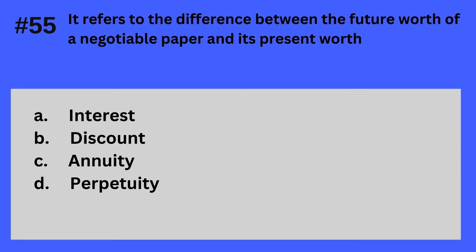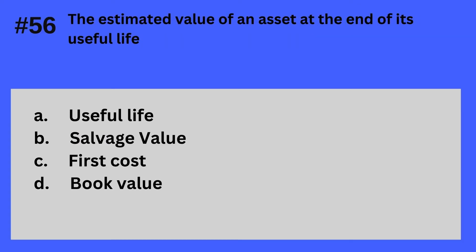Question 55. It refers to the difference between the future worth of a negotiable paper and its present worth. A. Interest, B. Discount, C. Annuity, D. Perpetuity. The answer is B — Discount.